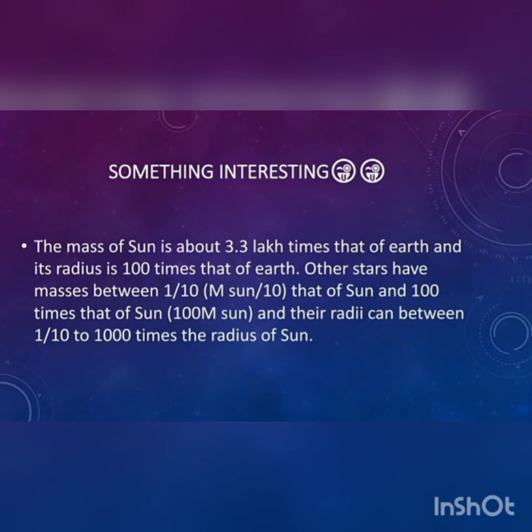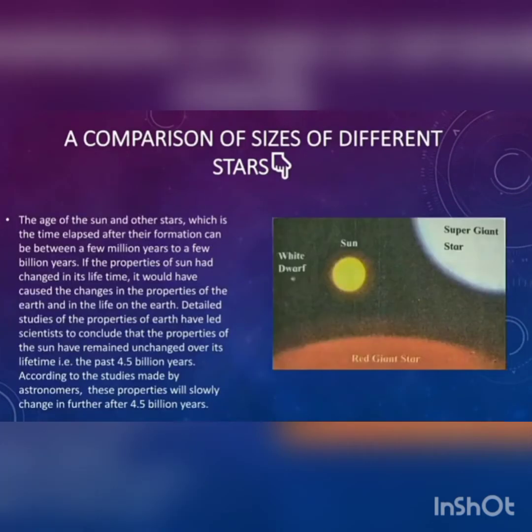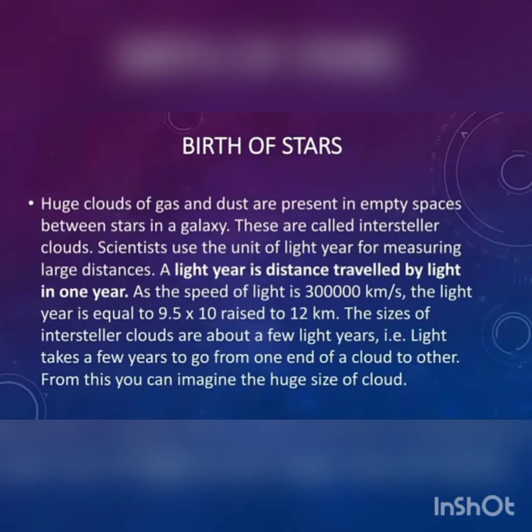The galaxy is rotating around an axis passing through its center and perpendicular to the disk. Its period of rotation is about 2 multiplied by 10 to the power 8 years. Here you can compare the size of the Sun with a white dwarf, a super giant star, and a red giant star.